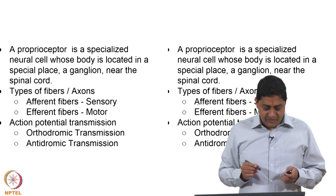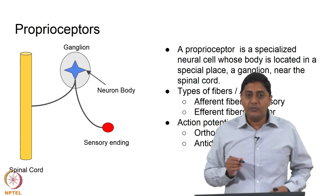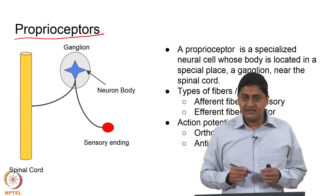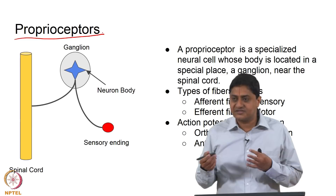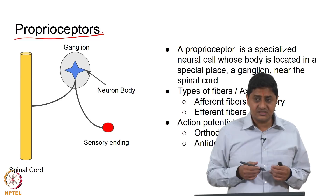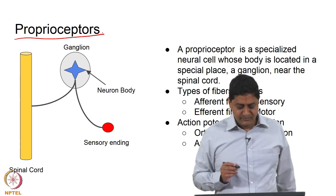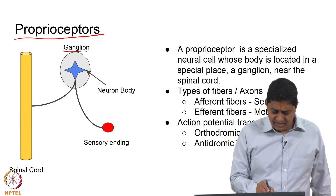Today's class focuses on proprioceptors — neurons specialized for body location and relative position sense. There are different types of proprioceptors, and in today's class we will focus on one type: muscle spindles. These neurons are located near the spinal cord in a ganglion and have a special property: they have two branches of axons.